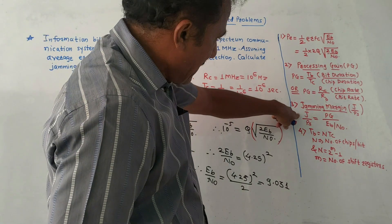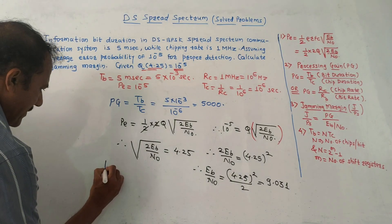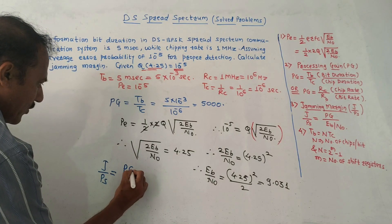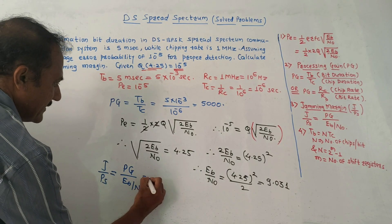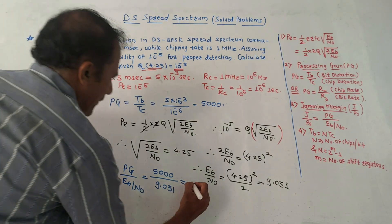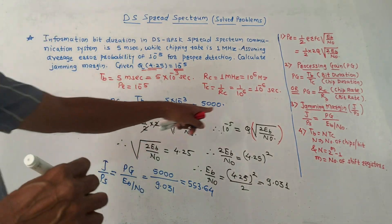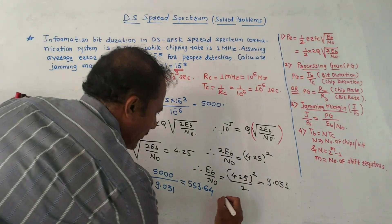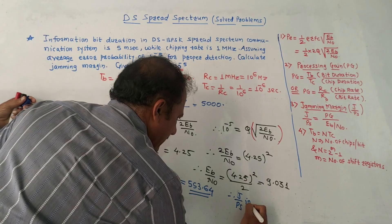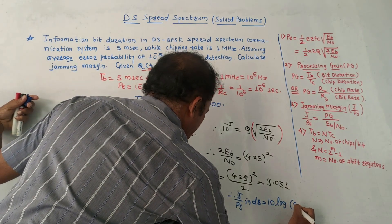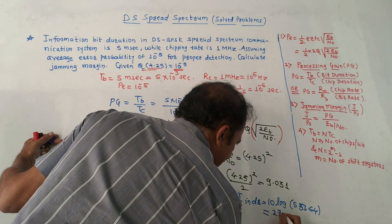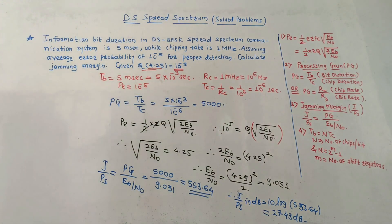Now the final aim is to calculate the jamming margin. We have the formula: jamming margin J by PS equals PG upon EB by N0. So it is 5000 divided by 9.031, which gives 553.64. The value of jamming margin should be expressed in dB. To calculate in dB: J by PS in dB equals 10 log of 553.64, which gives 27.43 dB. This is the value of the required jamming margin.